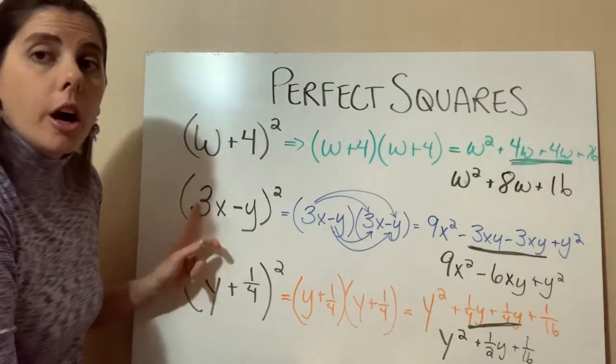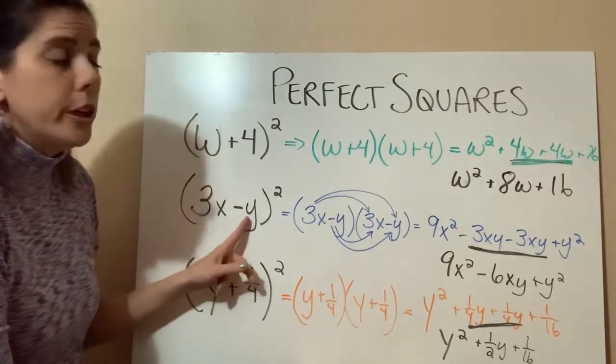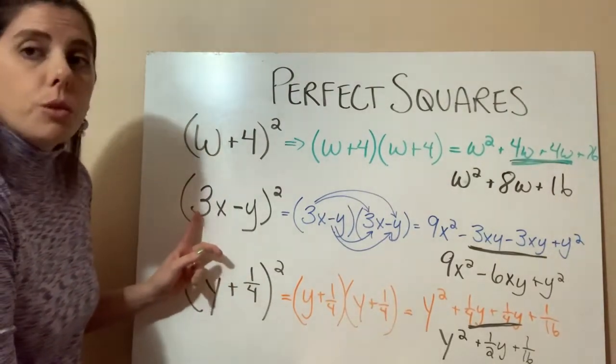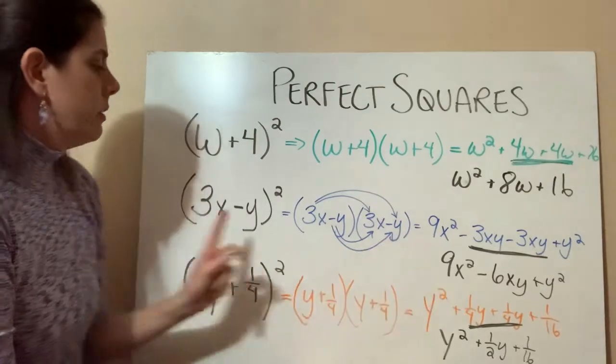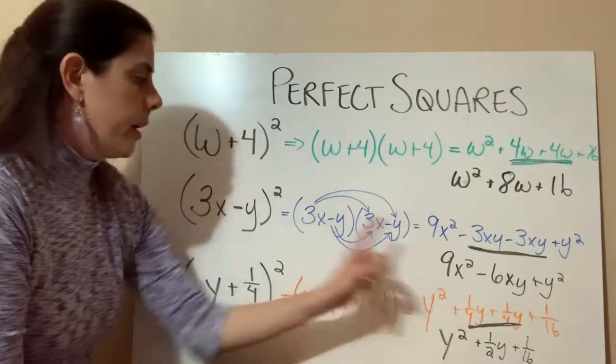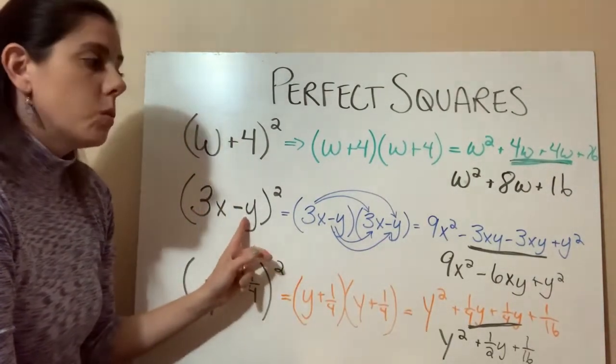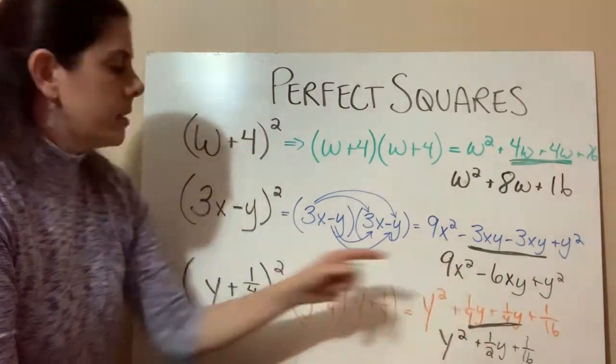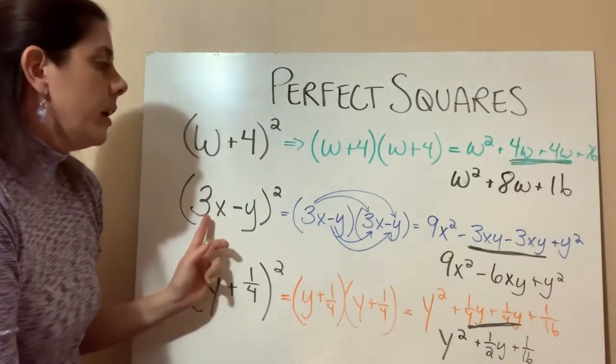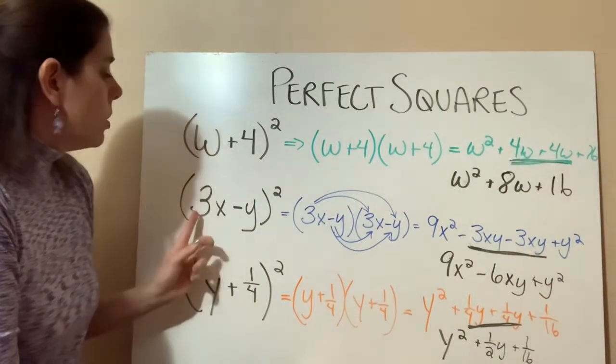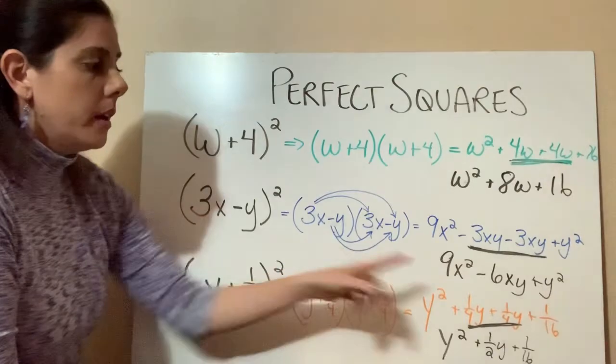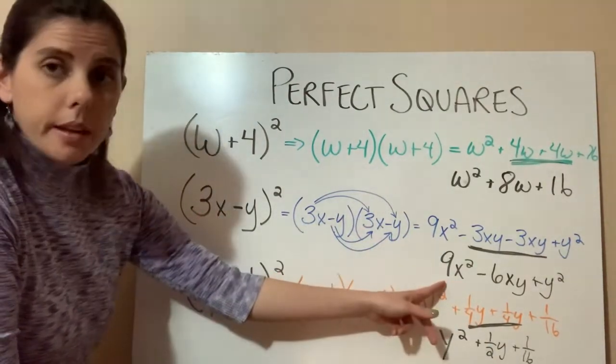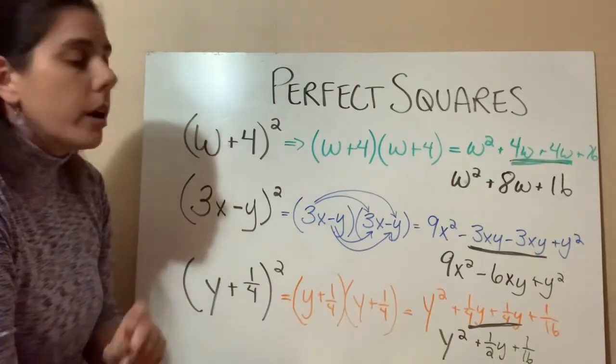So here we have our coefficient is on the front and we don't have one on the back. So just keep that in mind. But 3 times 3 is 9, x times x is x squared. And then y times y is y squared. And how do we get this 6? Well, a 3 and a 3. So the 3 plus the 3 gives us the 6. And the 3 times the 3 gives us the 9. What about our last one?